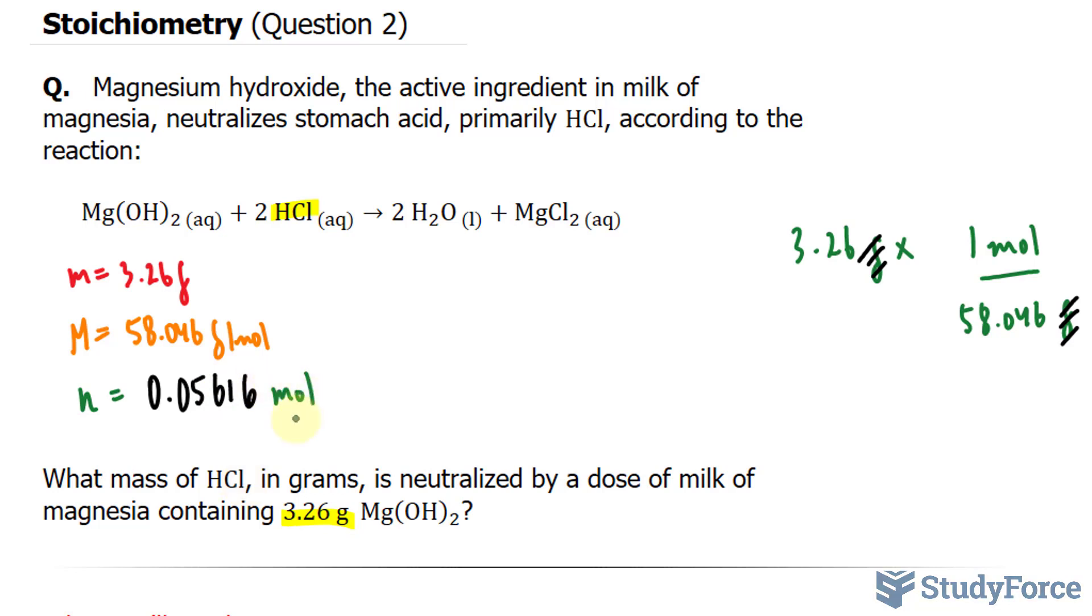Now remember, we started with a number 3.26 that had 3 significant figures. Although this number, the one I just wrote in black, has 4, keep in mind the last significant figure is this 1. I'll keep that last 6 just to prevent any rounding errors.